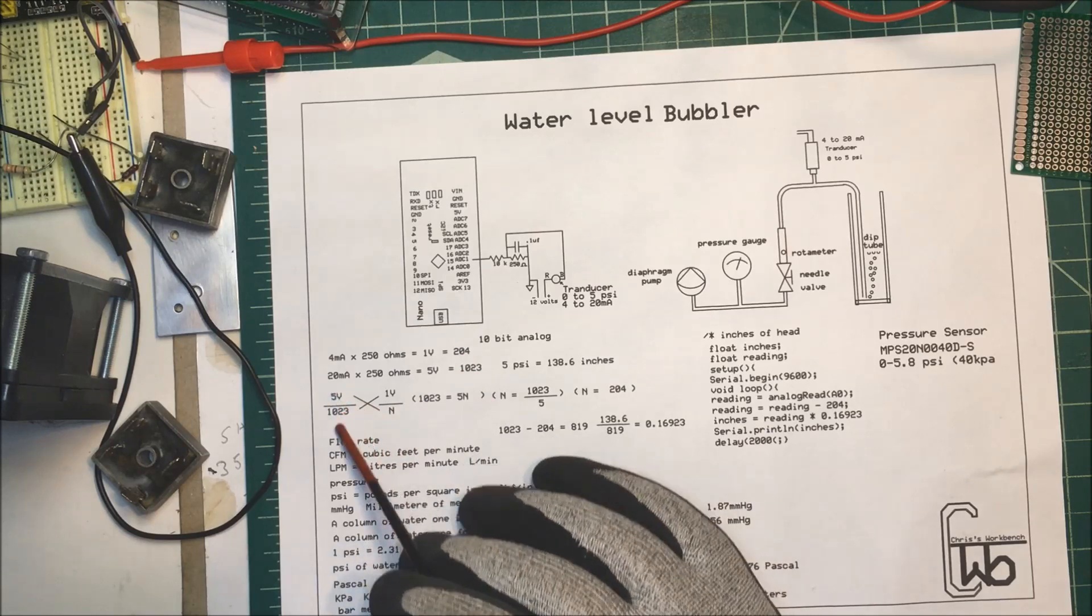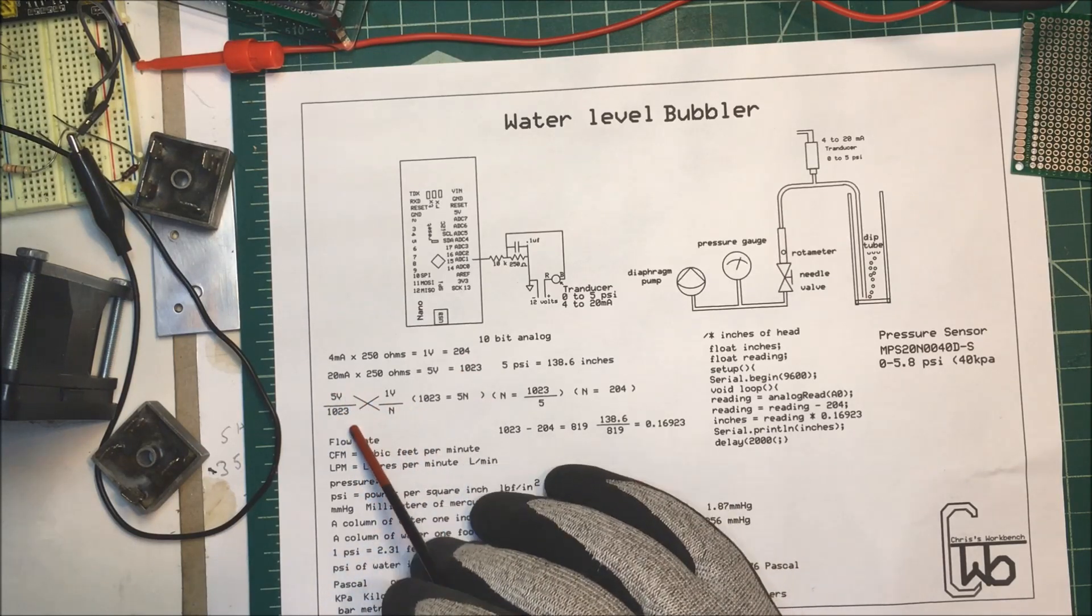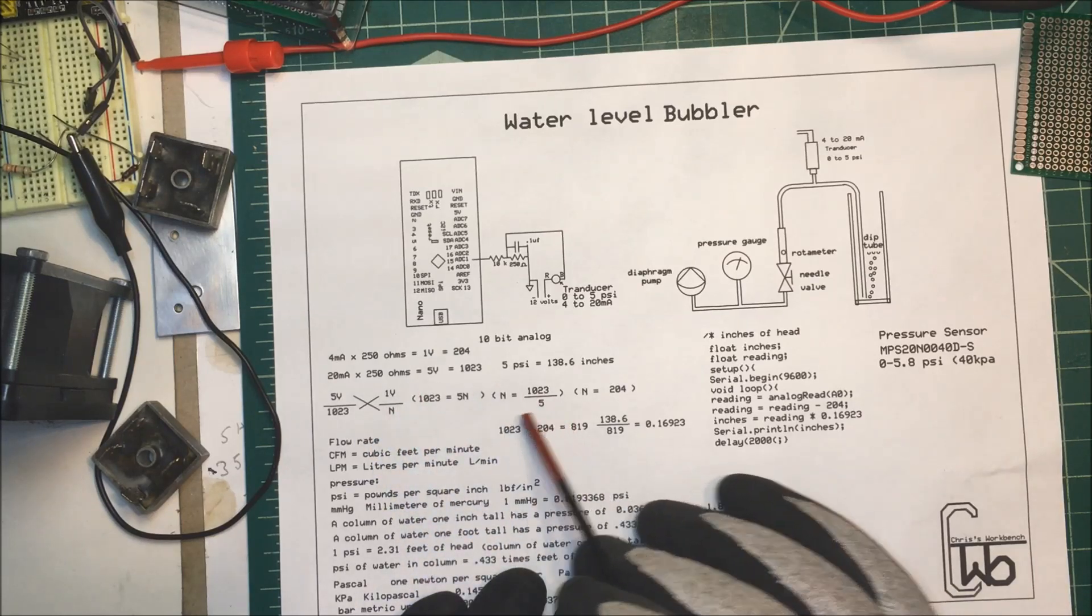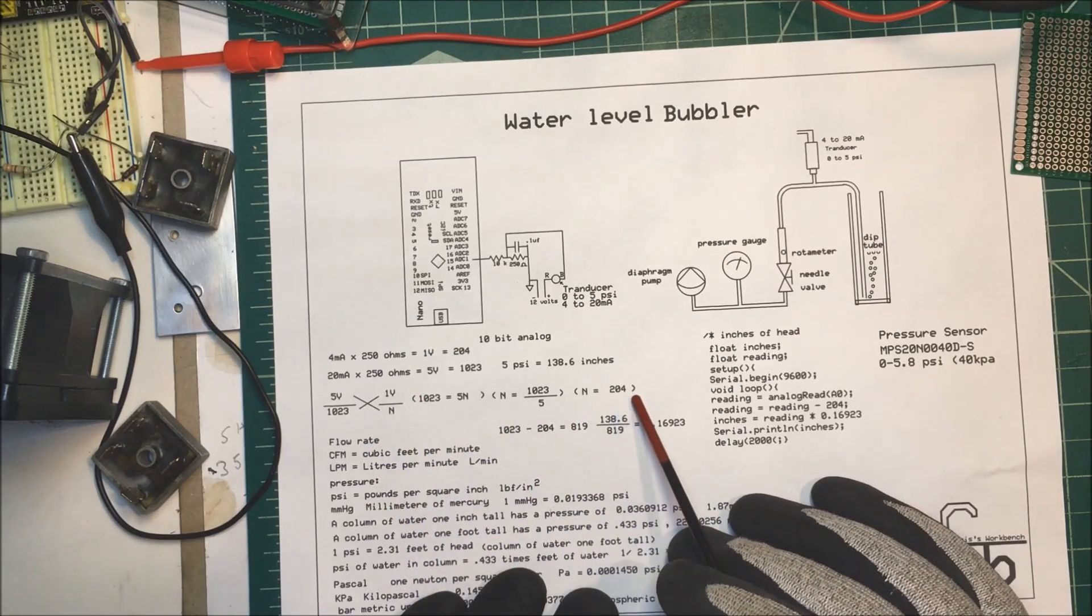Now to get to 204, I just cross-multiplied. I took five over 1023 and one volt over N, cross-multiplied and calculated it out, it's 204.